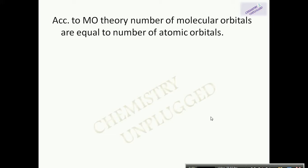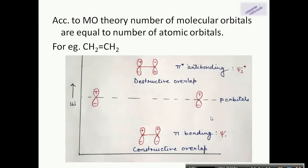According to molecular orbital theory, the number of molecular orbitals is equal to the number of atomic orbitals. For example, in the case of ethylene, we have one pi bond, which is generated by the parallel combination of two p orbitals. Two p atomic orbitals combine to form two molecular orbitals. When they combine constructively, they form the pi bonding orbital, denoted by psi 1.